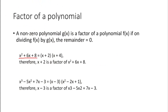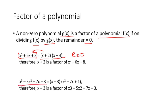Non-zero polynomial g(x) is a factor of polynomial f(x) if on dividing f(x) by g(x) the remainder equals 0. For example, when we divided x² + 6x + 8 by x + 2 the remainder became 0, so x + 2 is a factor. Similarly, for a cubic polynomial, when we divide by x − 3 and get remainder 0, we can call x − 3 a factor of that polynomial.